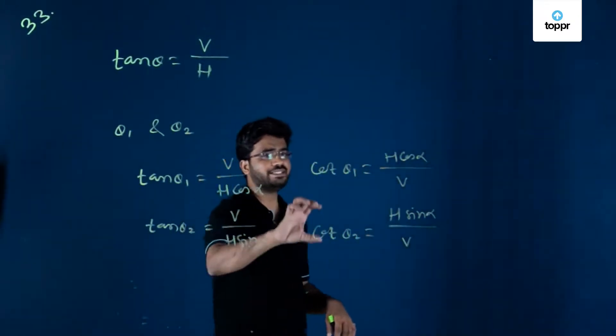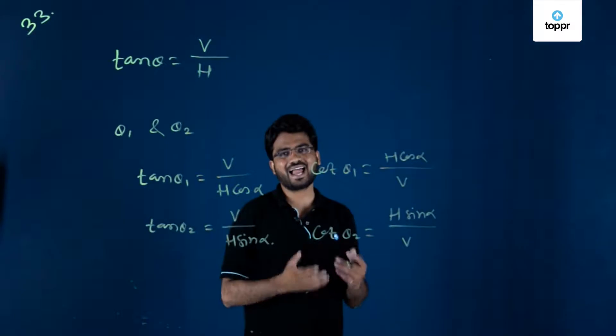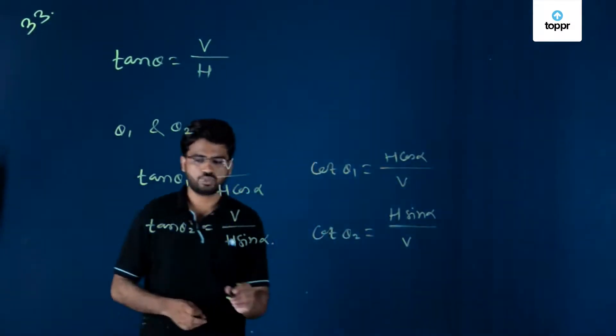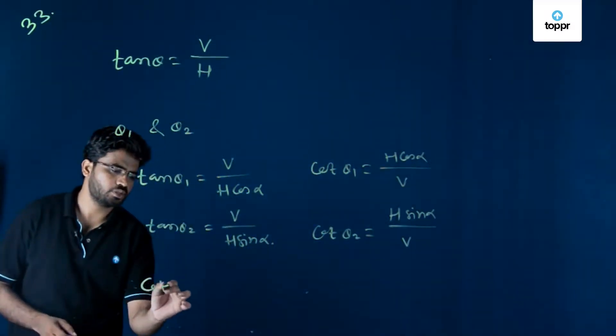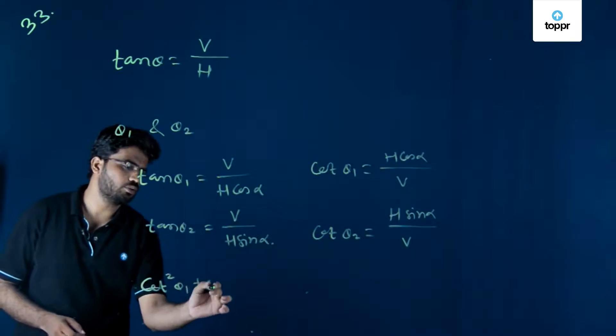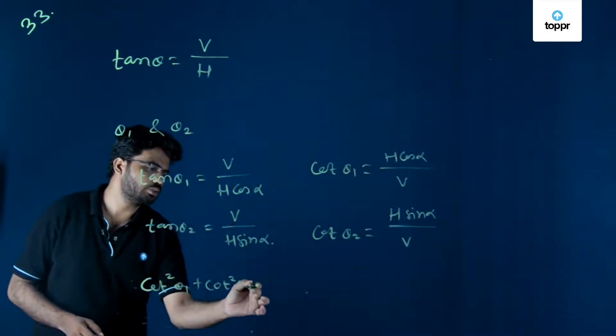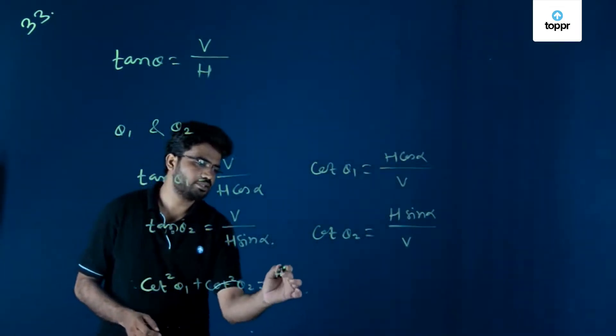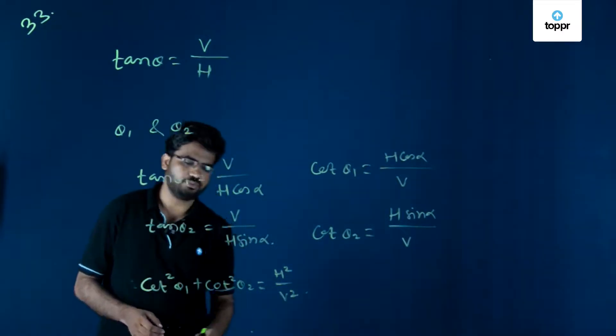Now, if we square these two terms and add, we will get cot square theta 1 plus cot square theta 2 is equal to H square by V square.